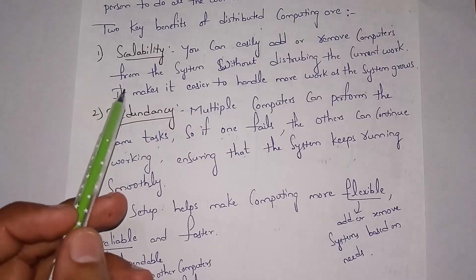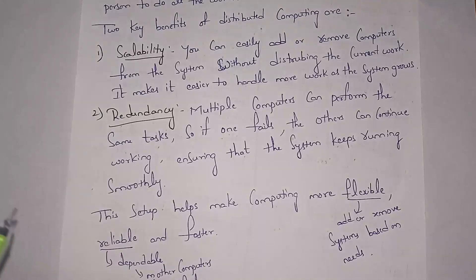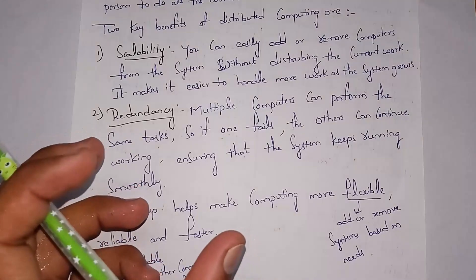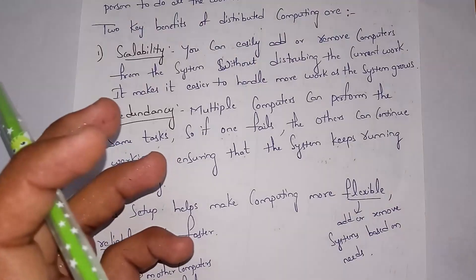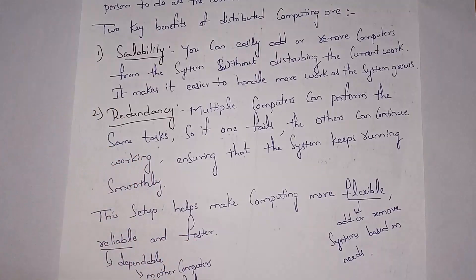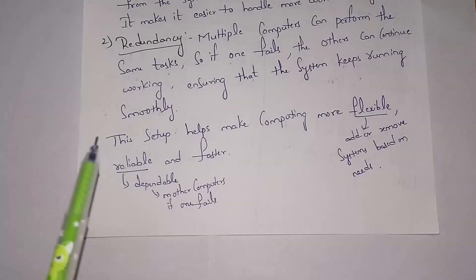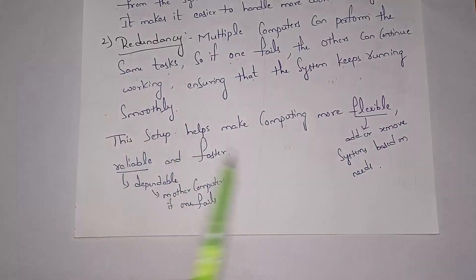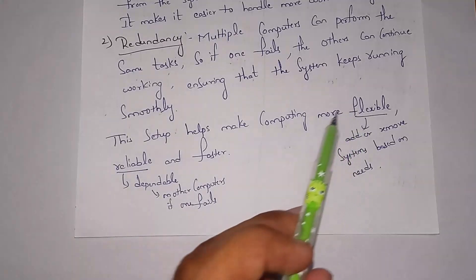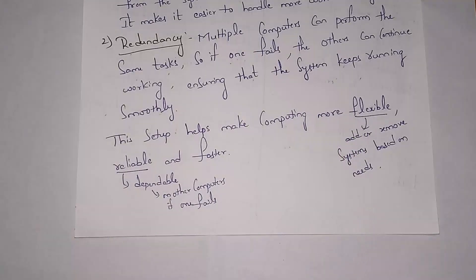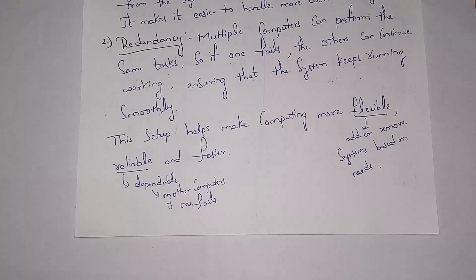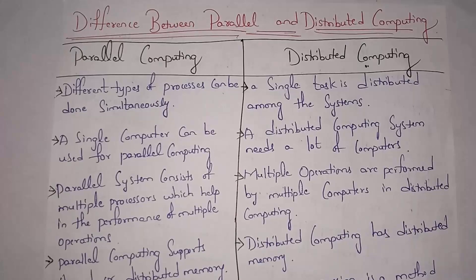Another advantage of distributed computing is redundancy — multiple computers are used to perform tasks, so even if any computer fails the remaining computers will continue working. This makes distributed computing more flexible, reliable, and faster. Flexible means we can add or remove systems as needed; reliable means remaining computers work even if one fails. Computers can be connected by internet or cable.